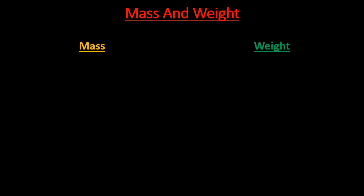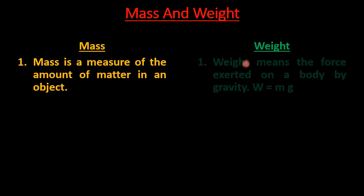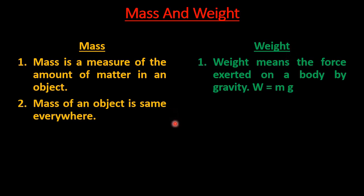Now let us discuss mass and weight — they are totally different from one another. Mass is the measure of the amount of matter in an object; it is the matter contained in an object. Weight, on the other hand, is the force exerted on a body by gravity, and it comes into existence only when there is a gravitational force. The formula for weight is: Weight = mass × gravitational acceleration (W = mg). Mass of an object is the same everywhere — it is constant — but weight varies according to the value of g.